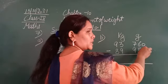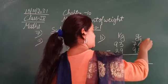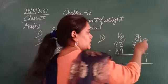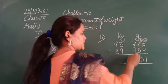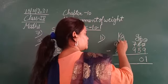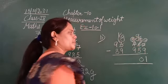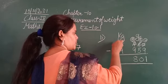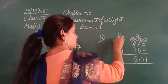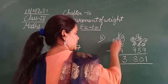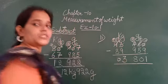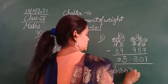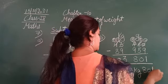So let's subtract. 0 minus 9 — not possible, so 0 will borrow from here. This becomes 5, this becomes 10. 10 minus 9 is 1. Now this is 5 and this is also 5, so 5 minus 5 is 0. 7 minus 9 — not possible, borrow from here. This becomes 2, this becomes 17. 17 minus 9 is 8. 2 minus 9 — not possible, so 2 borrows. This becomes 8 and this becomes 12. 12 minus 9 is 3. 8 minus 8 is 0. So after subtraction we got the answer: 3 kg 801 grams.